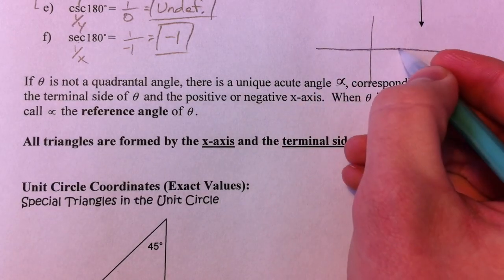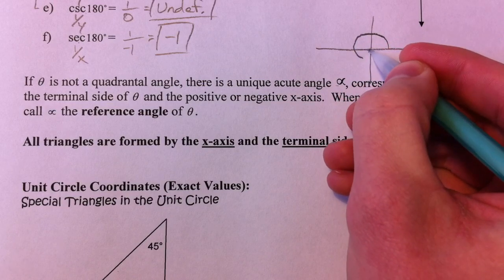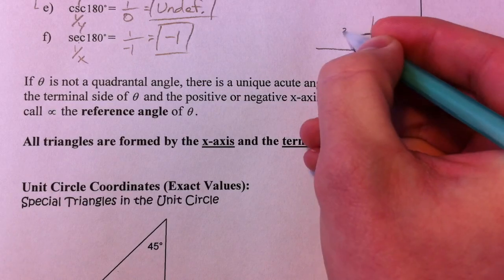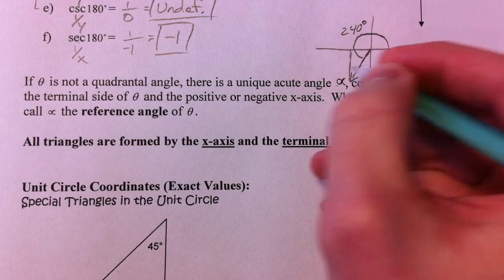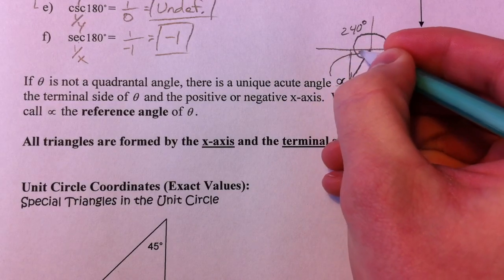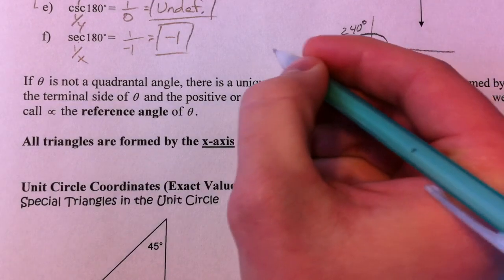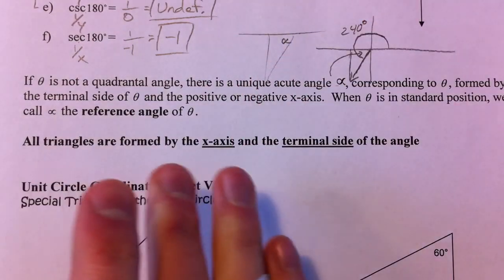If you have some angle, say we've gone around, and it's 240, 240 degrees. There's always this triangle that you make here, and we're going to label this angle right here as our reference angle, which is the same. That's your reference angle alpha.